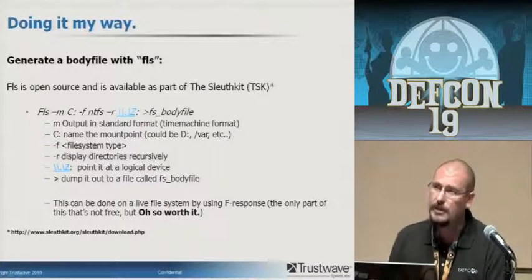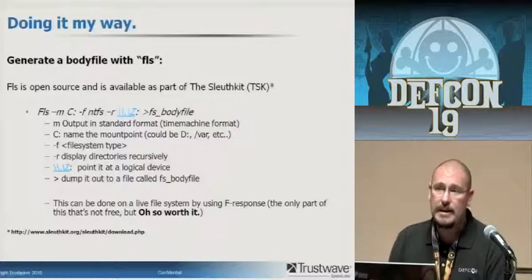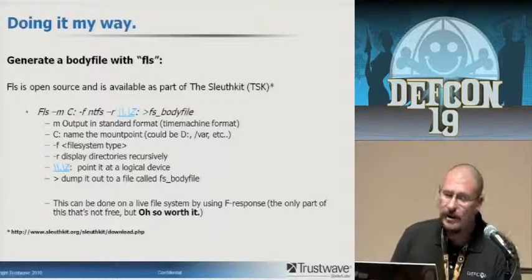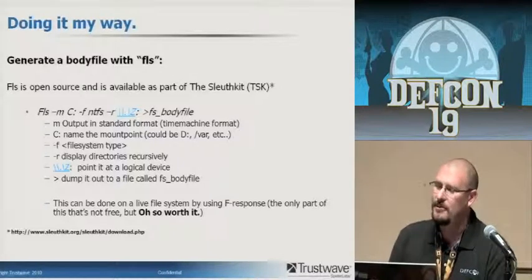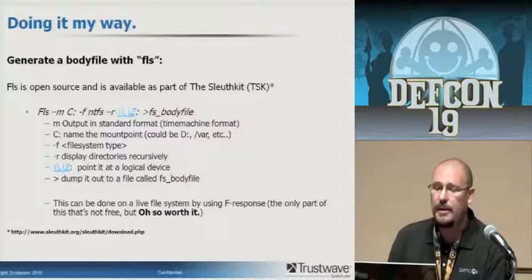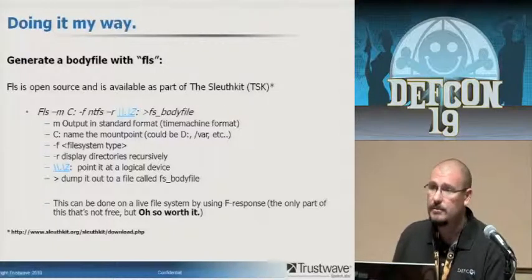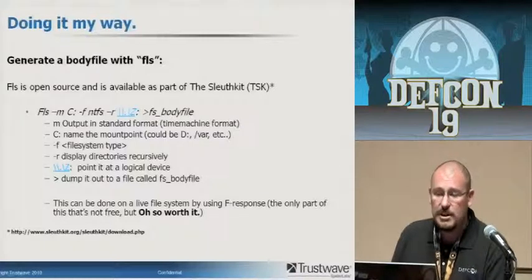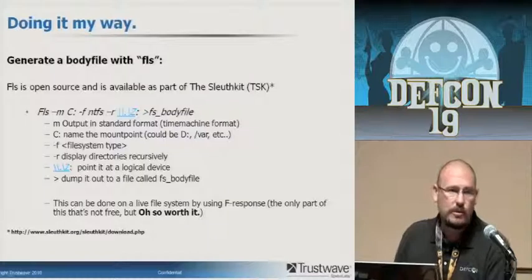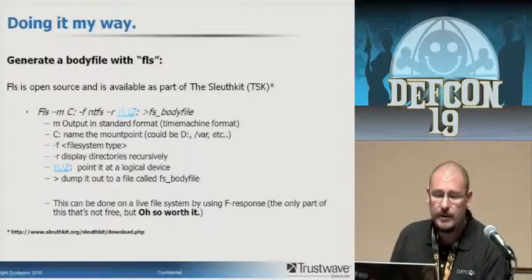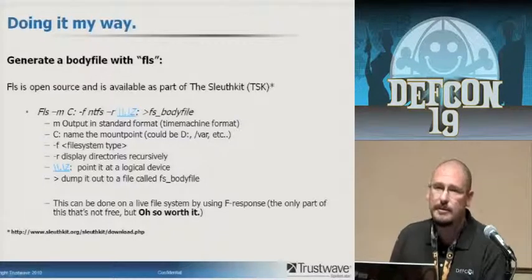You output it with a greater-than symbol to a body file — in this case I call it FS body file. Dash M is output in standard time machine format. Dash C names the mount point. Dash F designates the file system type. Dash R displays everything recursively, then point it at a logical device. The greater-than dumps it out to whatever file you want to call it. That doesn't matter — whatever you want.